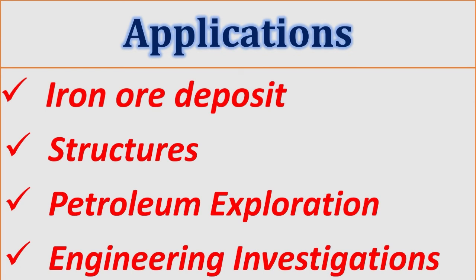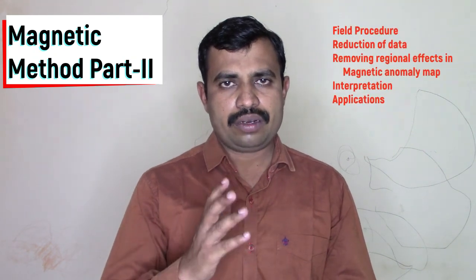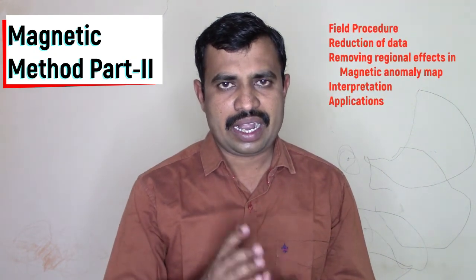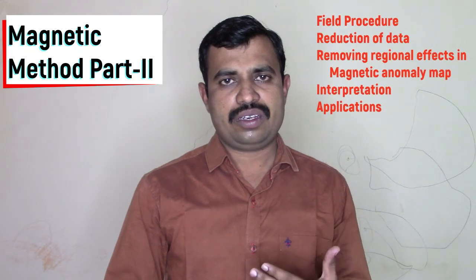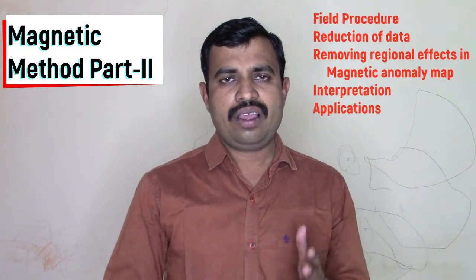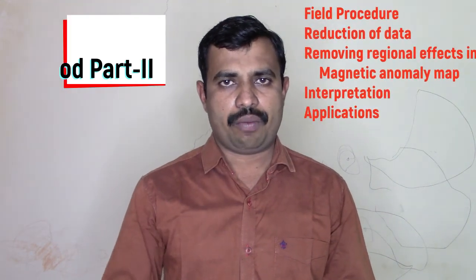In this lesson we have discussed the field procedure of the magnetic method of surveying, then the reduction of data, then removing regional effects from the magnetic anomaly map, then interpretation, and finally the different applications of the magnetic method. If you like this video, please share and subscribe to my YouTube channel, Geo and Tyre — All About the Earth.